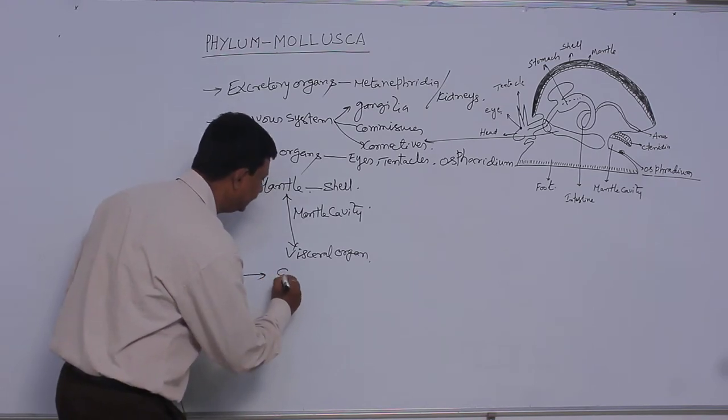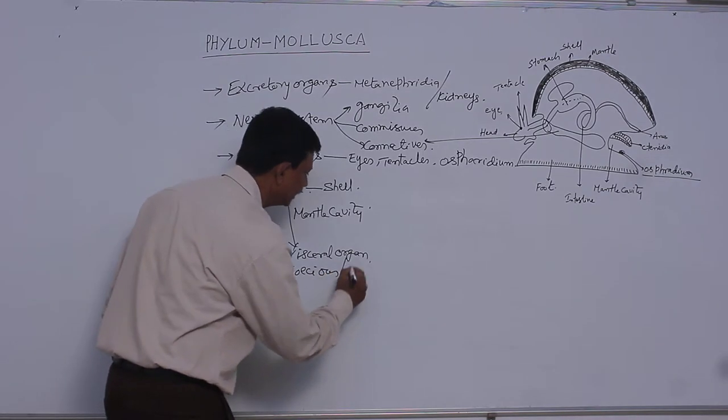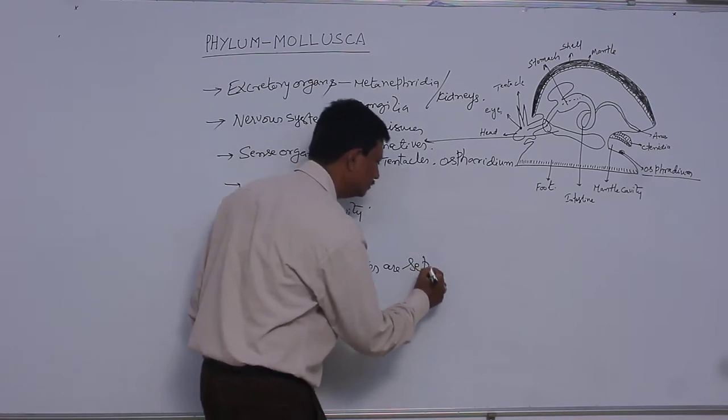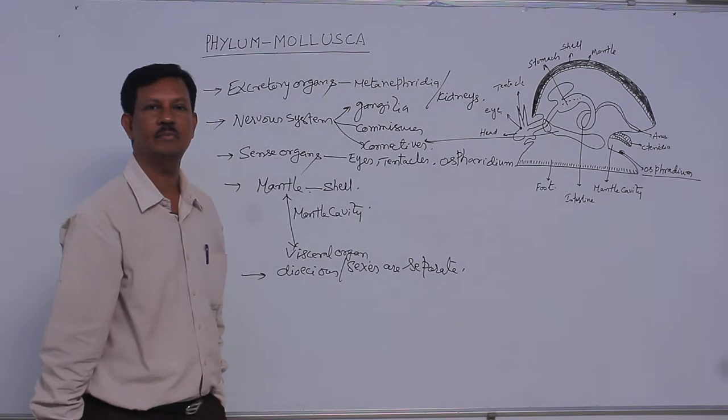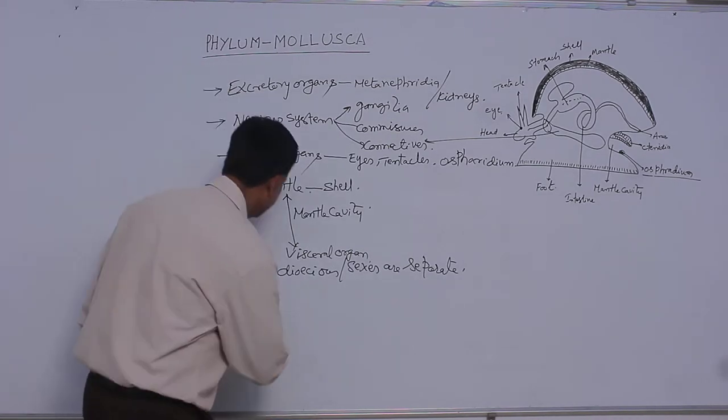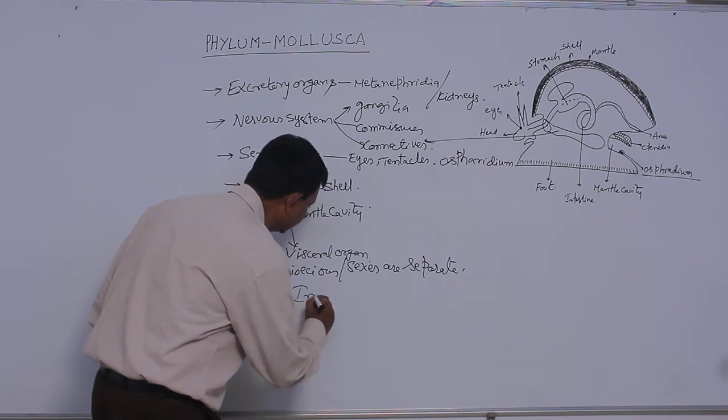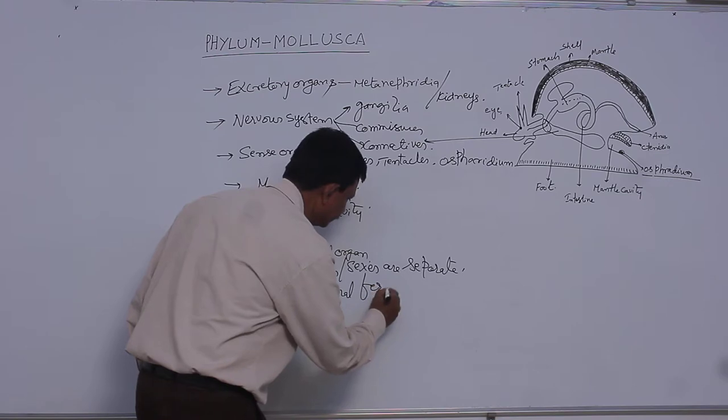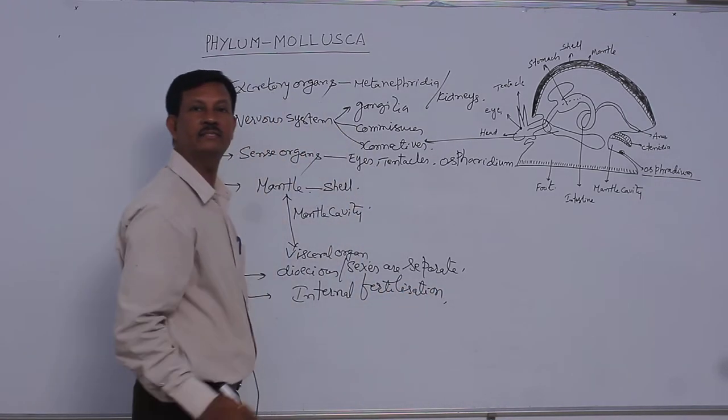And it is dioecious. Sexes are separate. Male animals and female animals are separate, mostly. And fertilization is internal fertilization, and mostly oviparous animals.